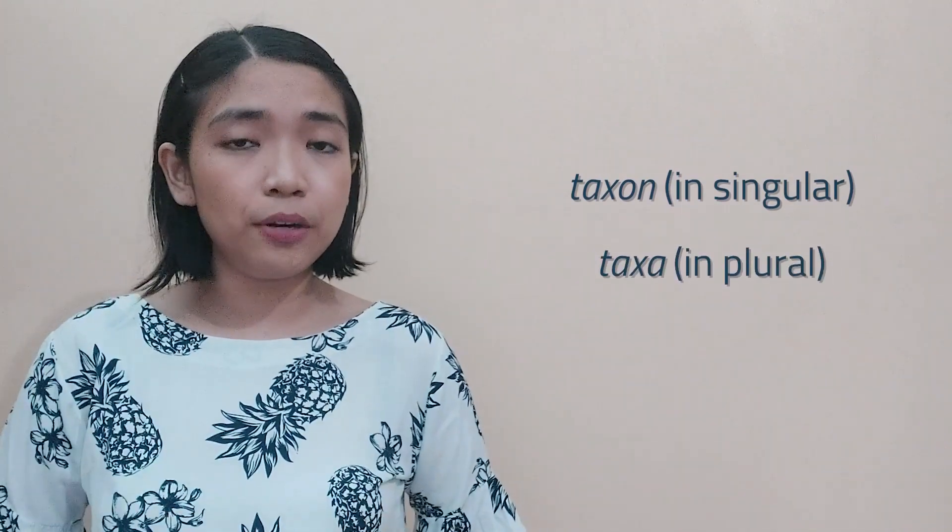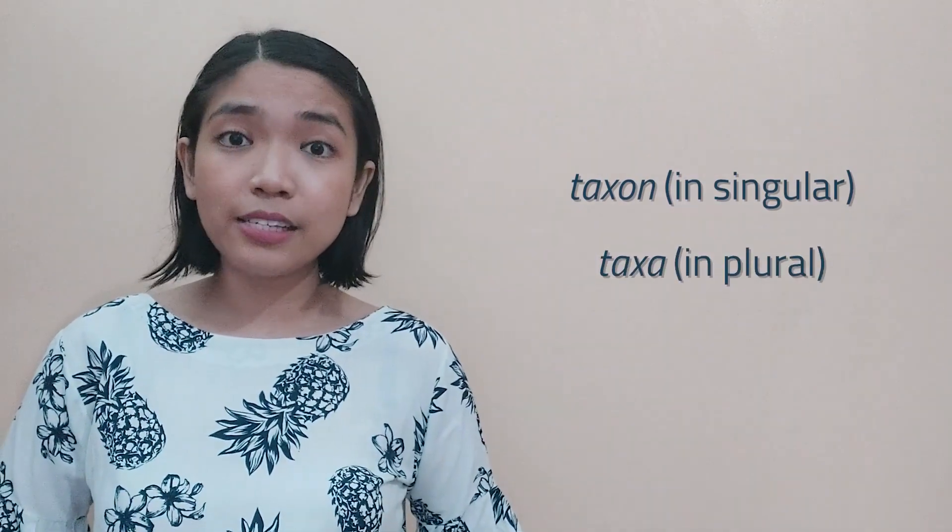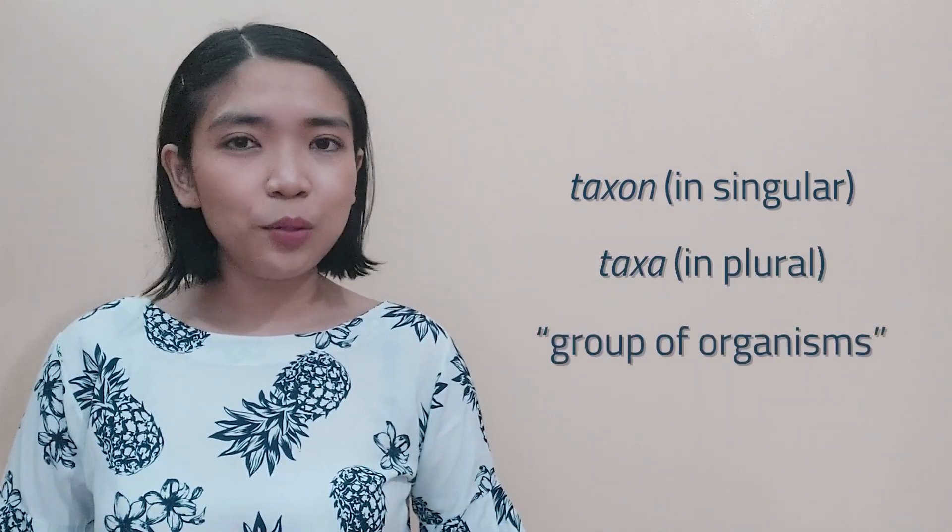First, what is taxonomy? Taxonomy is the science of classification, naming, and describing species. Taxon in singular and taxa in plural means group of organisms to which any taxonomic name is applied, while nomi means distribution.